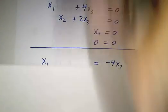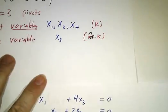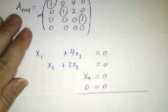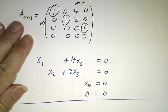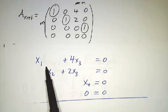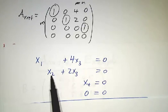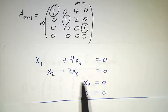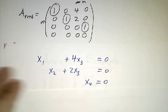And let's see what the equations mean. So here is our matrix, and we translate that to equations. The first row is x1 plus 4x3 equals 0. The second row is x2 plus 2x3 equals 0. The third row is x4 equals 0. The fourth row is 0 equals 0. That one doesn't really tell us anything, so we essentially have three equations and four unknowns.